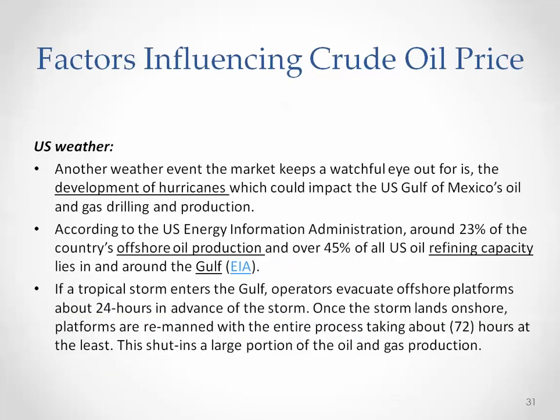The other weather event that could potentially affect the crude oil price is a hurricane. According to the EIA, Energy Information Administration, around 23% of the offshore oil production and 45% of US oil refining capacity is around the Gulf of Mexico. In case of a hurricane, this section could potentially be affected and supply can be interrupted. Around 24 hours before the hurricane, the production site has to be evacuated, and after the hurricane, it takes at least 72 hours to remand the facility and start production again.